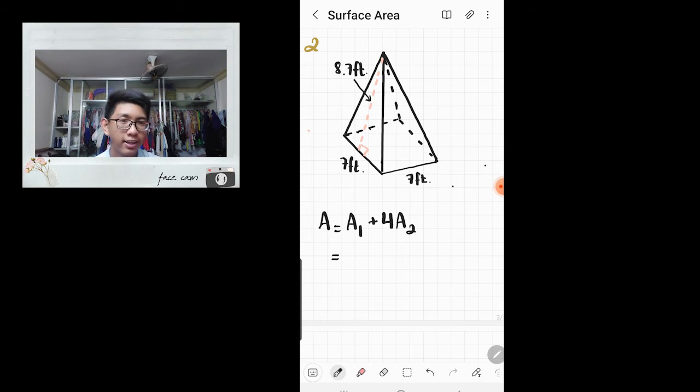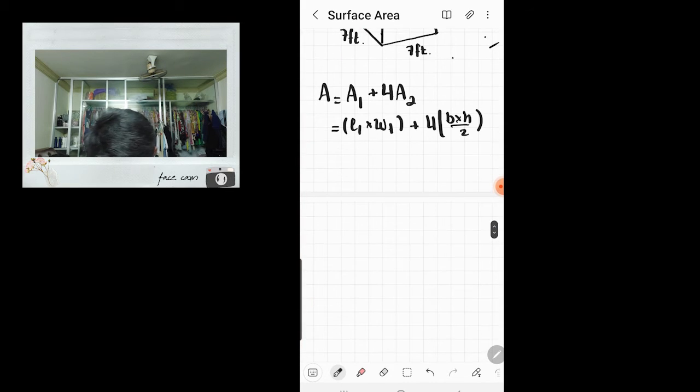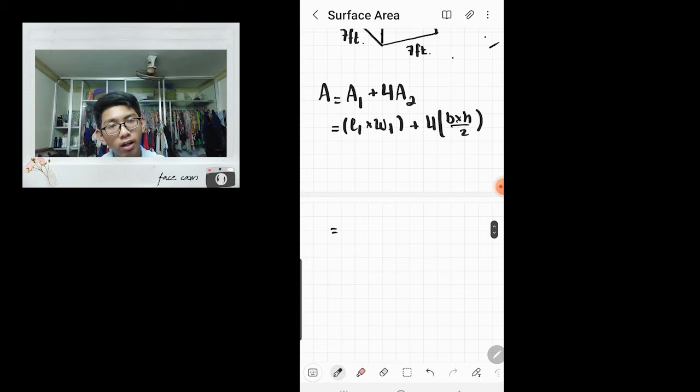The formula to find the area of a rectangle is length times width. So we'll take the length of A₁ times the width of A₁. Now the area of our triangle is base times height divided by 2. Let's plug in our values now. Now our length is 7 feet times width 7 feet.